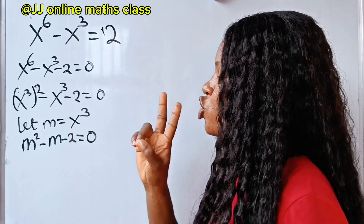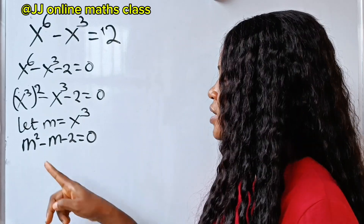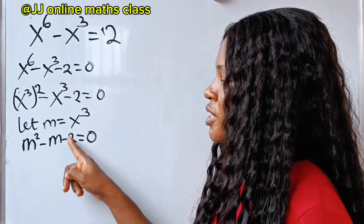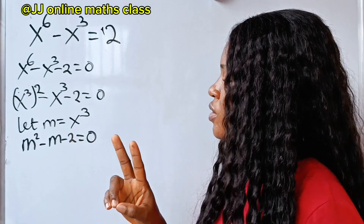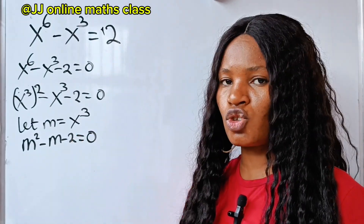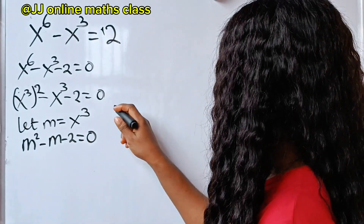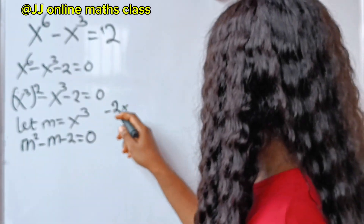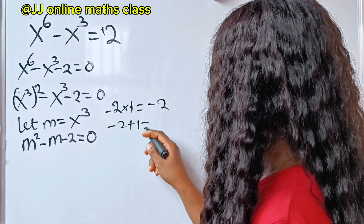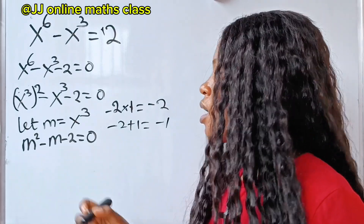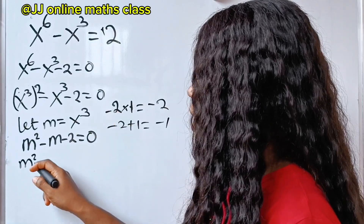We need two factors of minus 2 that when added together give minus 1, which is the coefficient of m. Those two factors are minus 2 and plus 1, because minus 2 times 1 gives us minus 2, and minus 2 plus 1 gives us minus 1. So we write this as m squared minus 2m, plus m minus 2 is equal to 0.